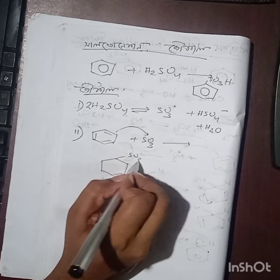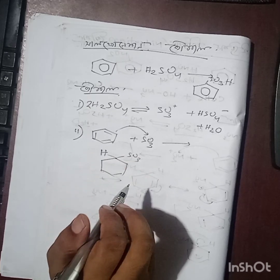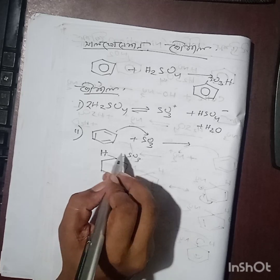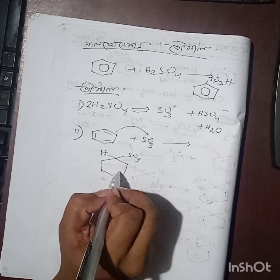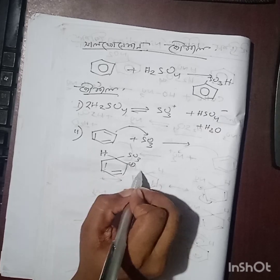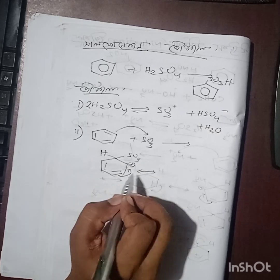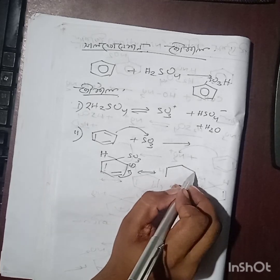SO3 attacks above the benzene ring along with hydrogen. You can show this with a double bond forming a carbocation with positive charge.